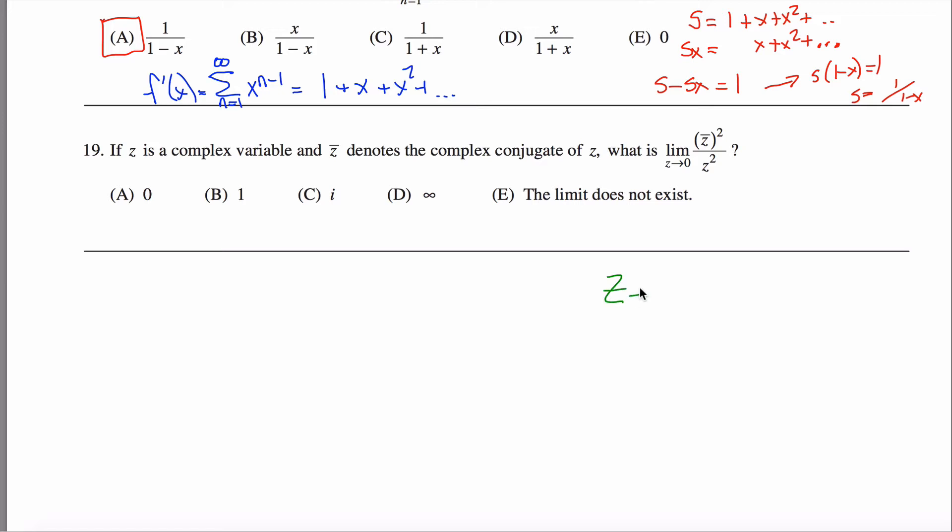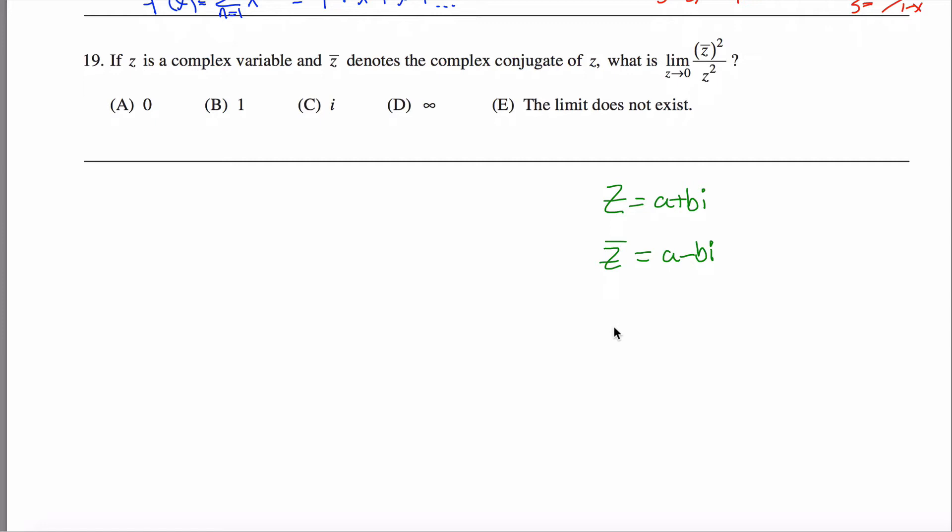If you think about your complex number, maybe let a plus bi represent it. The first thing you need to know is that its complex conjugate is just a minus bi. Probably not anything new to anybody watching this. I'm going to go ahead and calculate or come up with expressions for the square of those two numbers while I'm here.